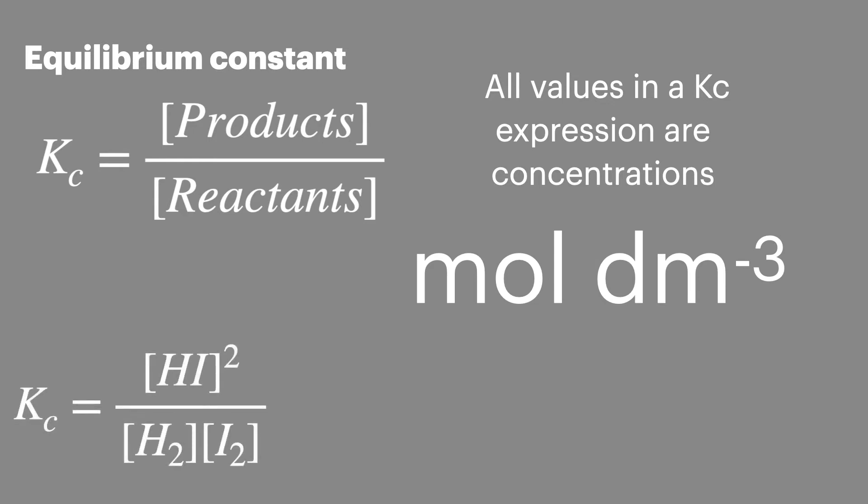So if we take the KC expression for the reaction with hydrogen with iodine to form hydrogen iodide, we have the concentration of HI squared on the top and the concentrations of hydrogen and iodine on the bottom.